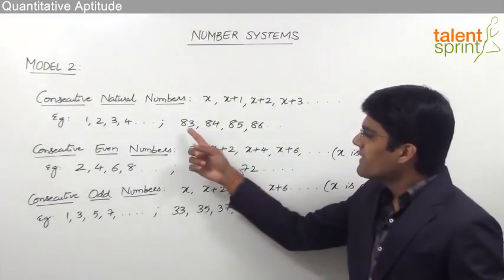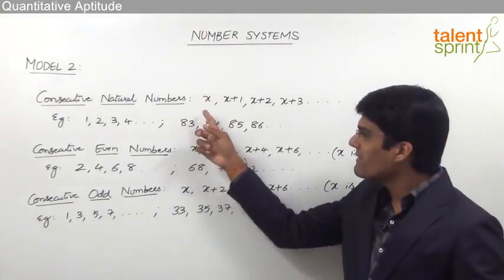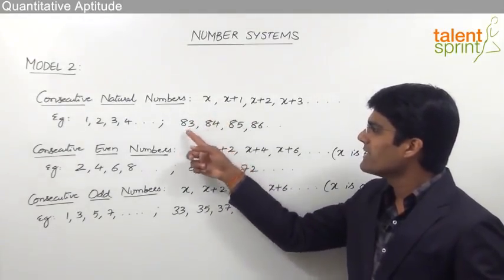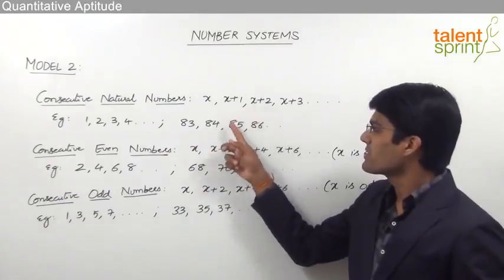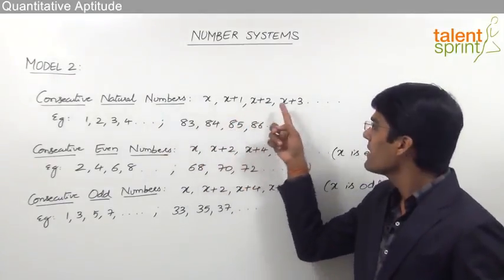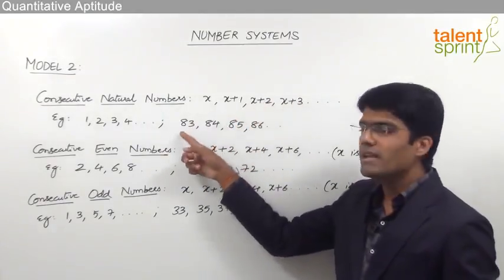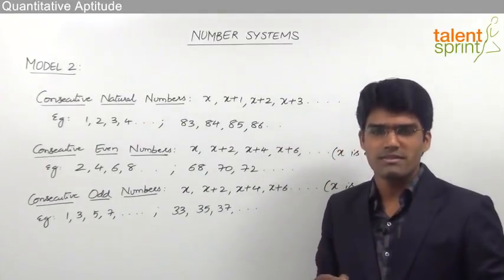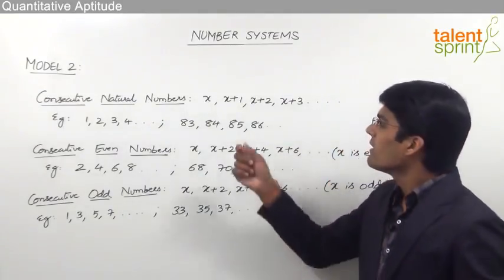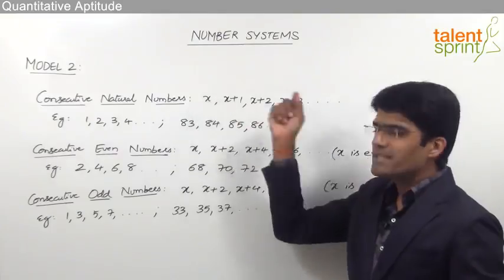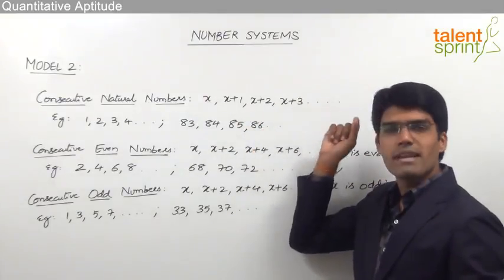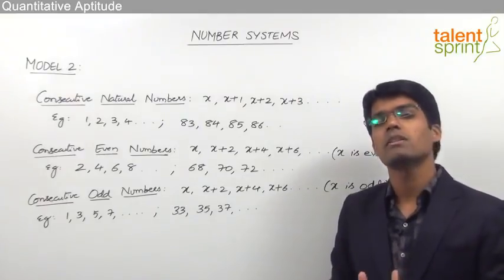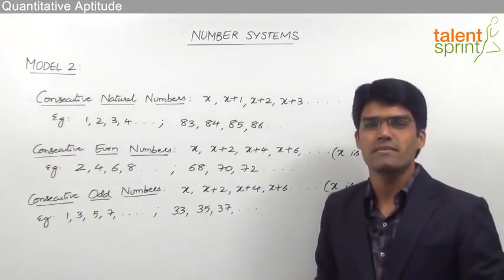If the first number is taken as x, meaning 83 is x, then x+1 is 84, x+2 is 85, and x+3 is 86. So whenever we solve questions related to consecutive numbers, we take the first number as x, the second as x+1, the third as x+2, and so on, depending on how many consecutive numbers we have.